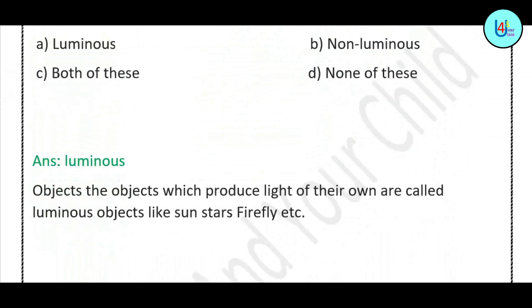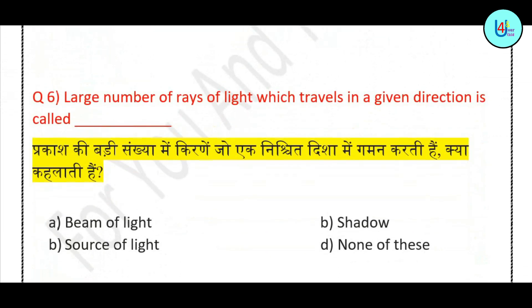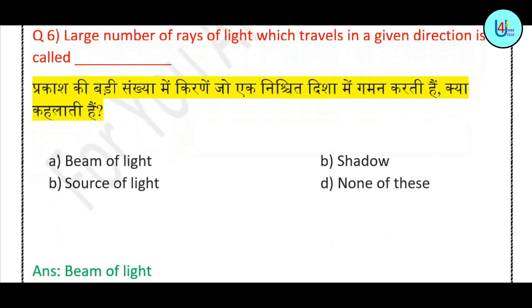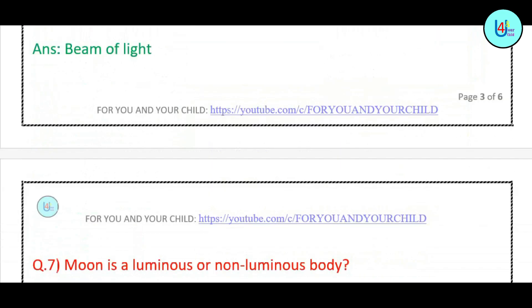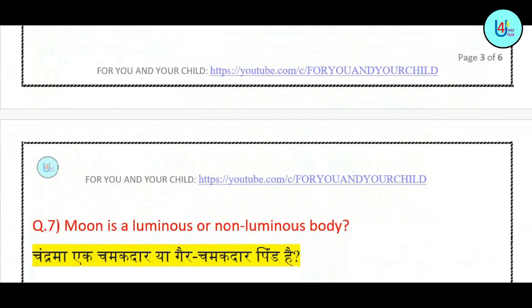Question number 6: A large number of rays of light which travel in a given direction is called — beam of light, shadow, source of light, or none of these? Correct answer is: beam of light. Question number 7: Moon is a luminous or non-luminous body? Answer is: moon is a non-luminous body.